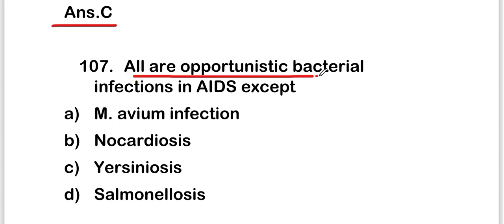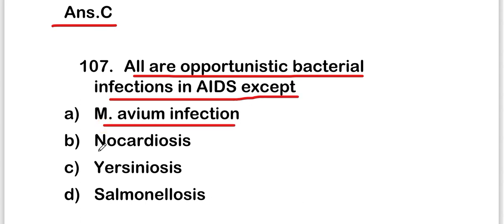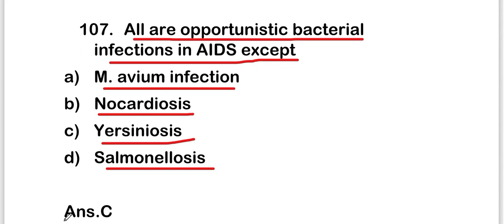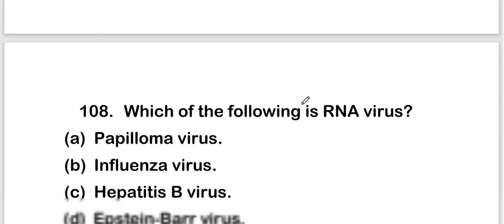The next question is: all are opportunistic bacterial infections in AIDS except — Mycobacterium avium infection, nocardiasis, Yersinia, or salmonellosis? The right answer is option C. Yersinia is not an opportunistic infection in AIDS.